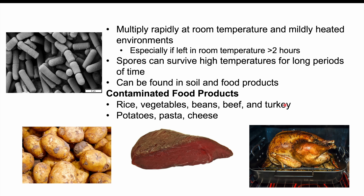There are two forms of infection with Bacillus cereus. One is the emetic form — a vomiting type — most likely to occur from eating contaminated rice, and in some instances from contaminated potatoes, pasta, or cheese. The second form is the diarrheal form, which mostly occurs from eating contaminated meat products like beef and turkey.